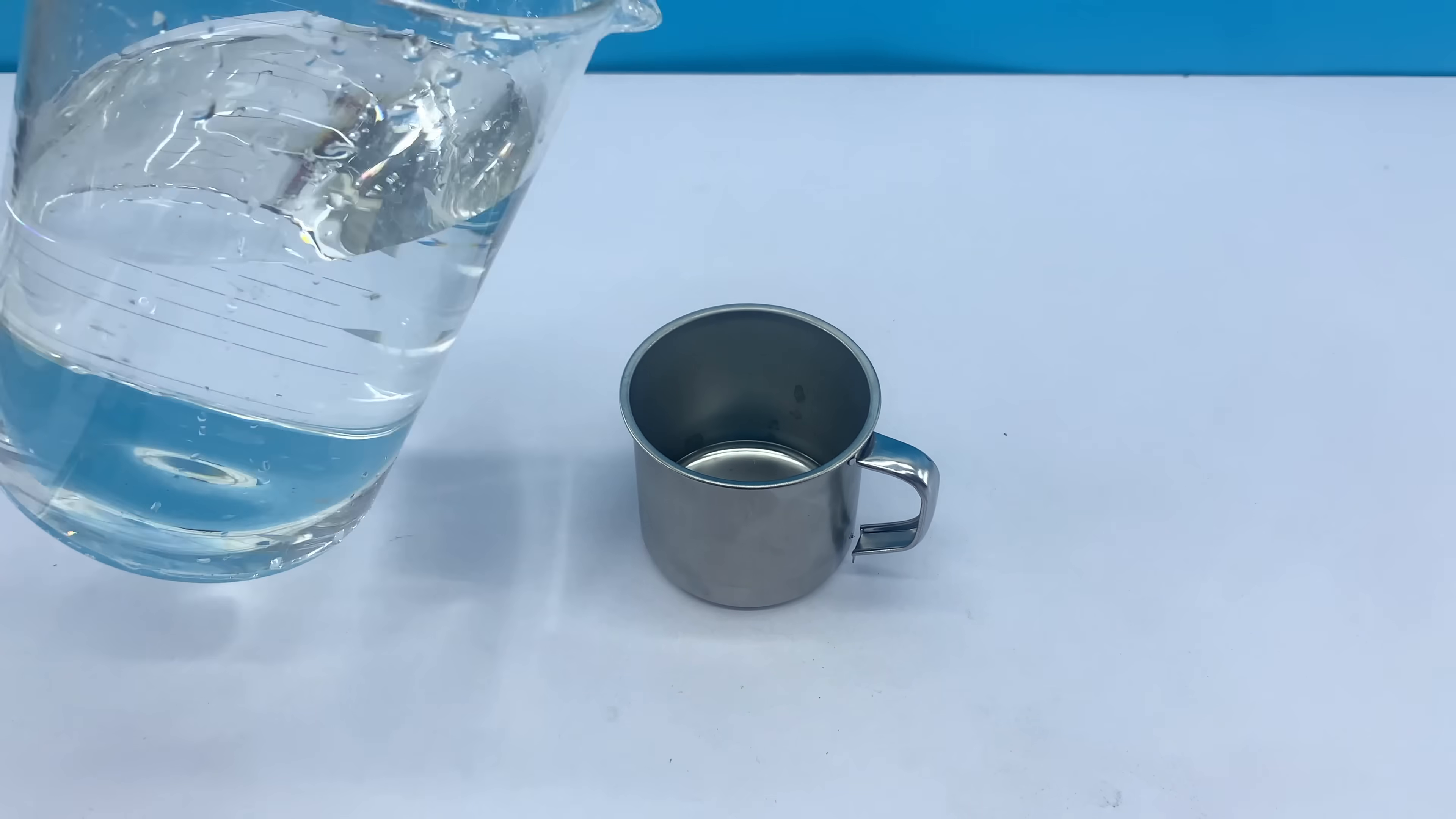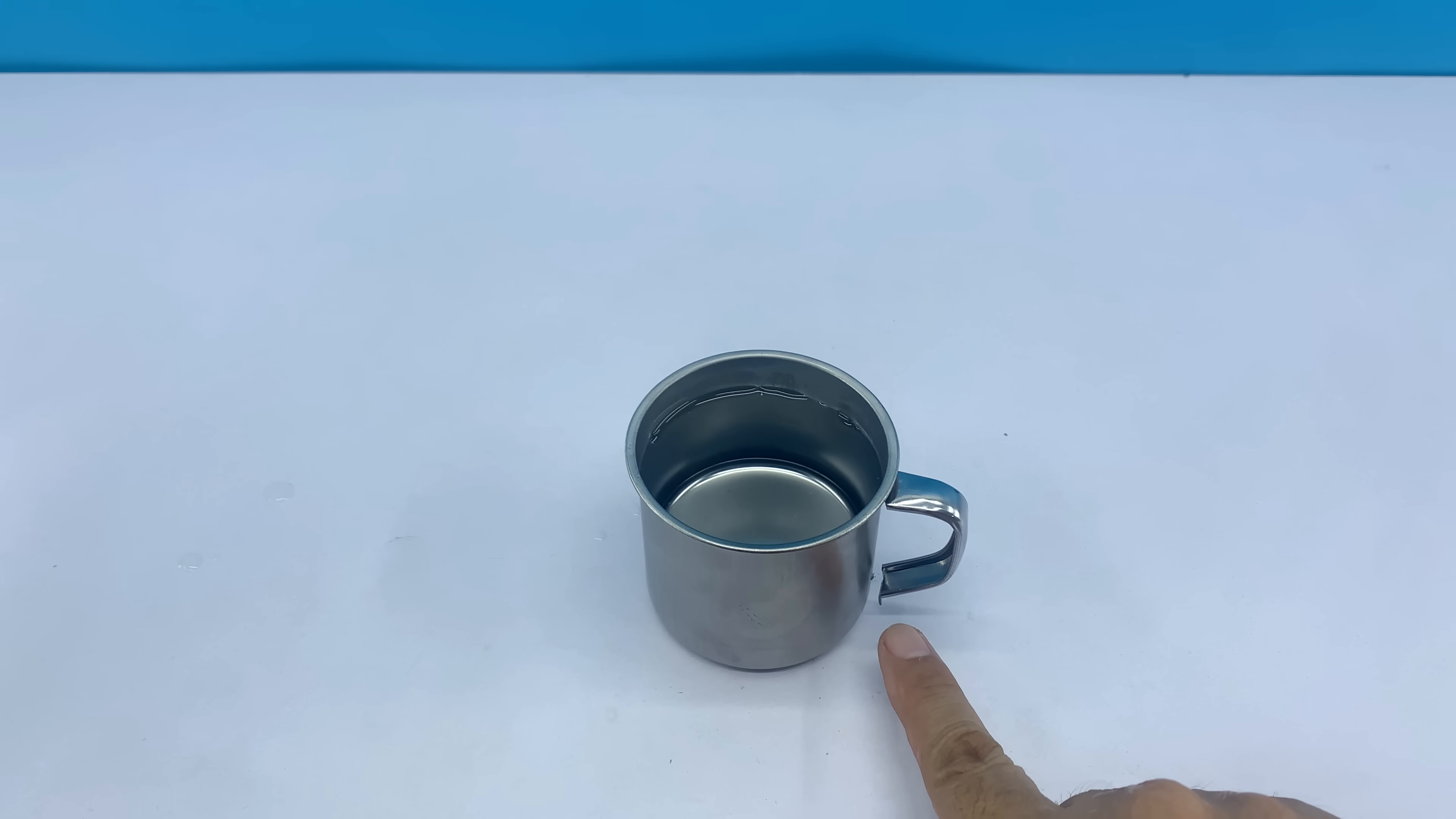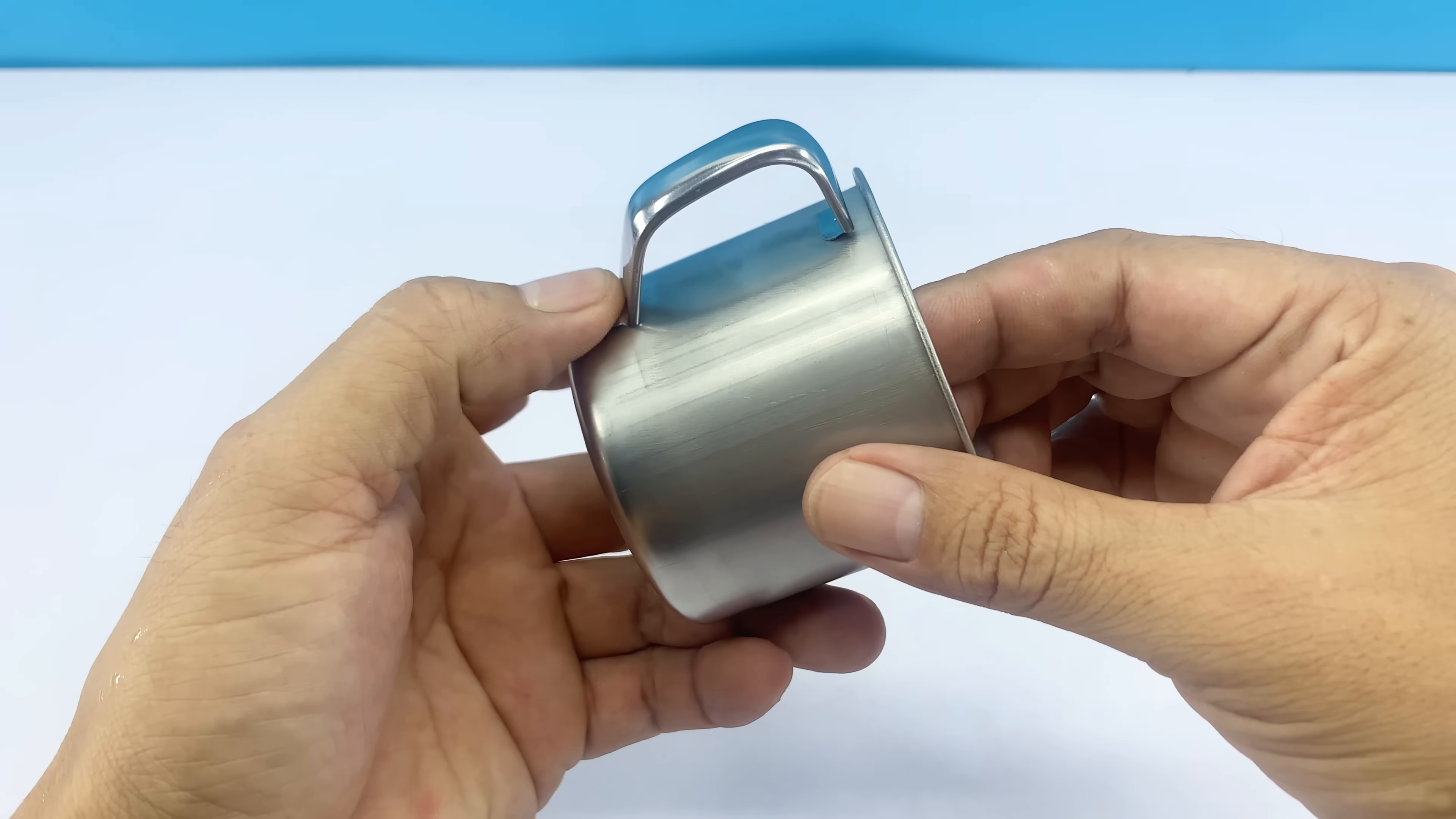Hello everyone. Today I want to talk about a common issue: the use of metal items at home. Many of us have seen stainless steel cups that seem durable, yet their handles often crack or loosen over time. But don't worry, I just came up with an idea. With this stainless steel cup that has a cracked handle, it definitely won't stop me. Let's get started together.